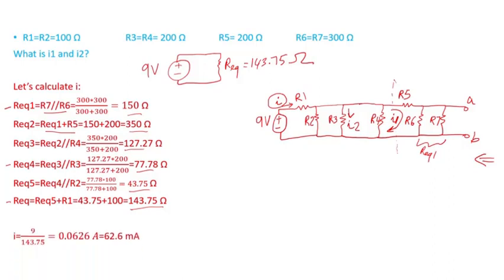Now I can apply Ohm's law. Current equals voltage divided by resistance, so 9 volts divided by 143.75 ohms gives 0.0626 amps, or 62.6 milliamps. Now that I've found the source current, I can apply current division.